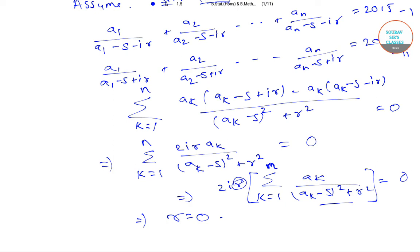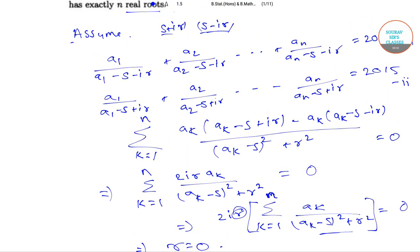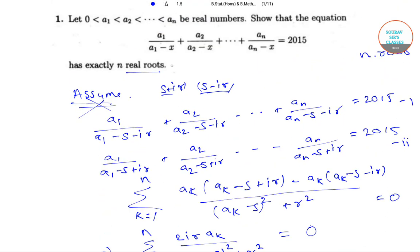So the imaginary part of the roots is 0, then the roots will no longer be complex. Therefore our assumption is wrong and all the roots are real, that is this expression has n real roots.